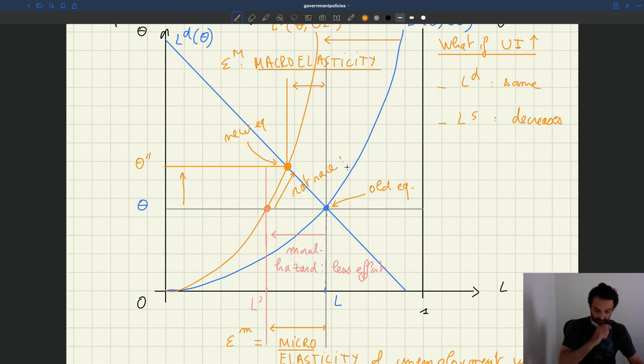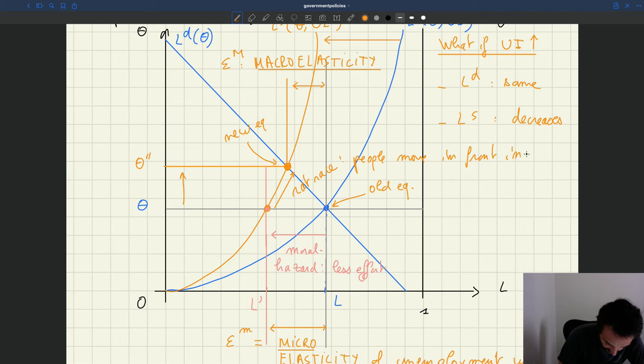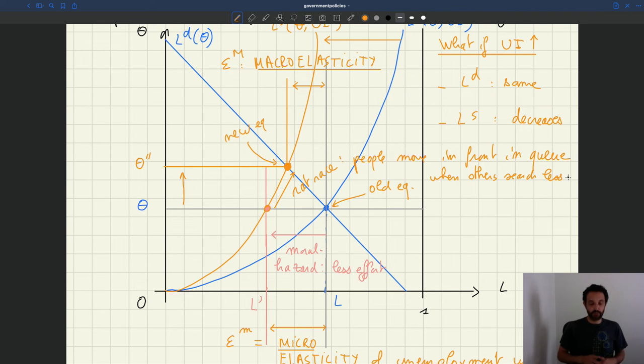That is the rat race channel basically. The idea is that some people move in front in the queue when others search less. Okay, so that rat race channel is going to balance this moral hazard channel we talked about initially.